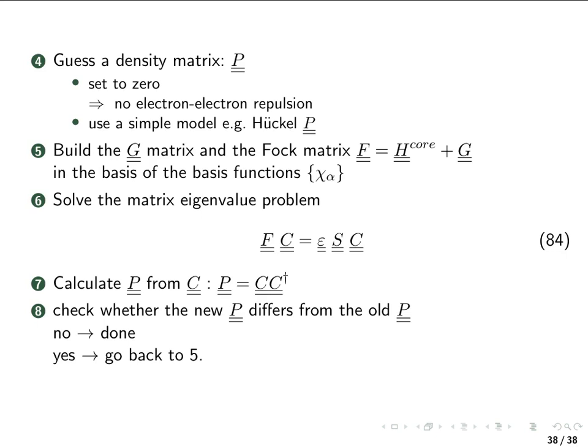What we then have to do is to check whether the density matrix which we get here is different than the one we started with. And of course in the first iteration that's definitely going to be so but after some iterations the differences are going to be smaller. And one has to set a threshold or every program sets a threshold how small the difference between the one we started with and the one which comes out has to be, how self consistent it has to be. Now if they are the same or sufficiently the same then we are done, we are finished. We found the molecular orbital coefficients and with molecular orbital coefficients we can then calculate the molecular orbital by making the linear combination of the basis functions.